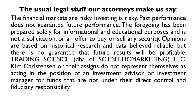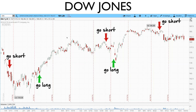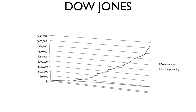Of course the usual legal disclosure: financial markets are risky, investing is risky, past performance does not guarantee future performance, the foregoing is prepared solely for informational and educational purposes and is not a solicitation or offer to buy or sell any security. So who might be interested? We're not doing something that requires you to be chained to your desk — we're giving you signals. On the Dow, ten thousand dollars from 2006 to now turned into over four hundred twenty-five thousand dollars with compounding. These are real trades issued in real time to our members going back to 2006.